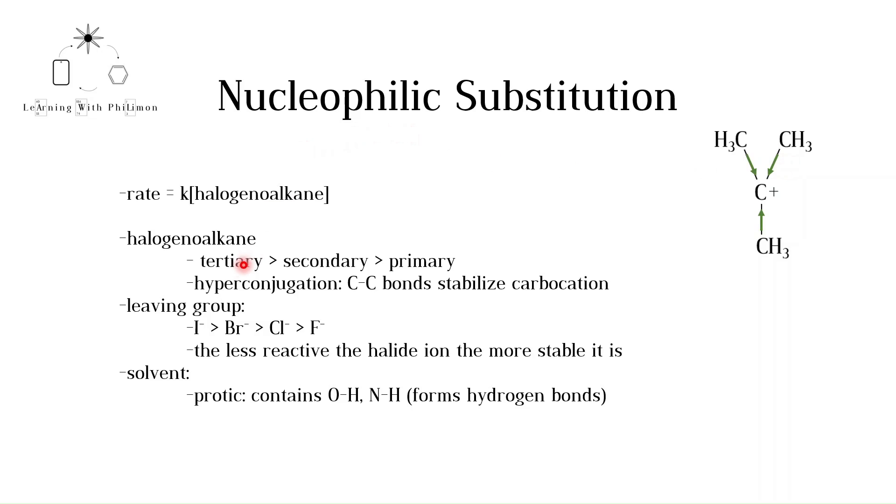Tertiary carbocations are more stable than secondary carbocations because they are bonded to one more carbon atom. The rate of reaction is faster for tertiary halogenoalkanes because the more stable tertiary carbocation is more likely to form.